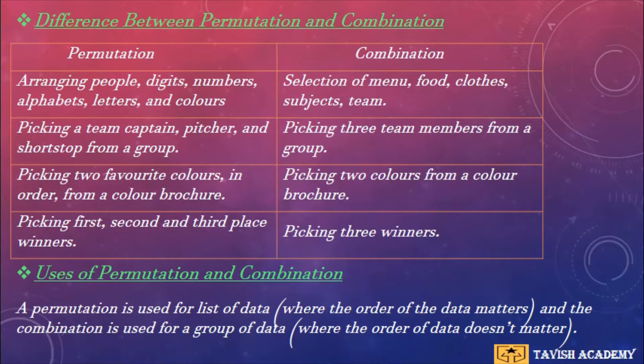Picking three team members from a group. Permutation: picking two favorite colors in order from a color brochure. Combination: picking two colors from a color brochure. Permutation: picking first, second, and third place winners. Combination: picking three winners.